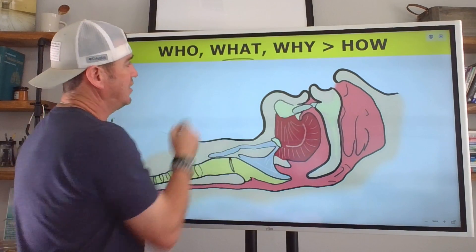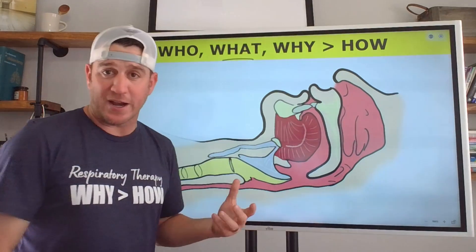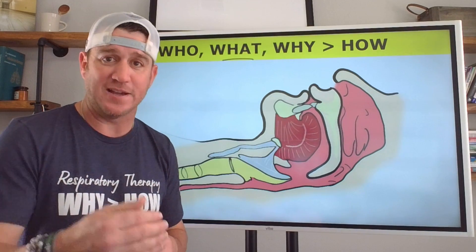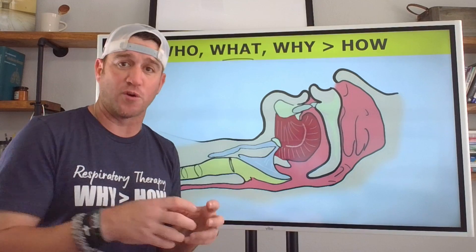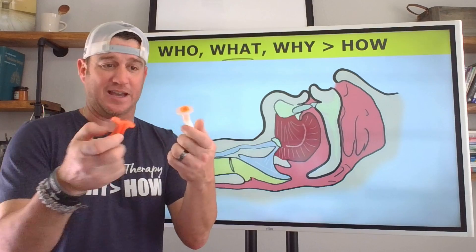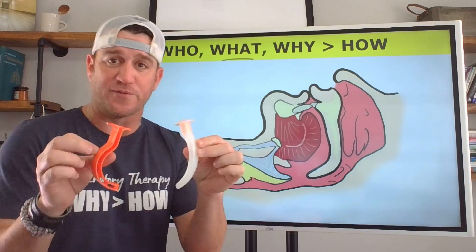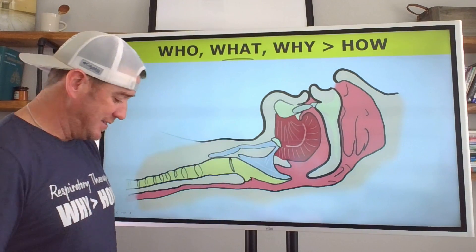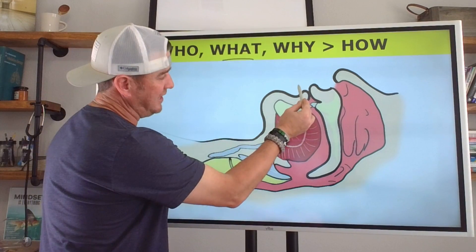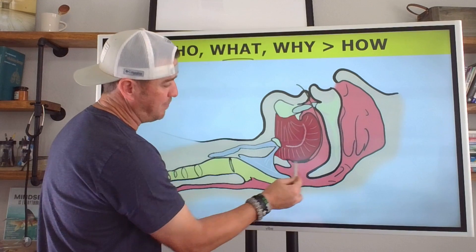What is an oropharyngeal airway? It's an artificial airway that is utilized to aid us in properly ventilating a patient when we're performing bag valve mask ventilation. These airways will be inserted into the oropharynx and will sit behind the base of the tongue.